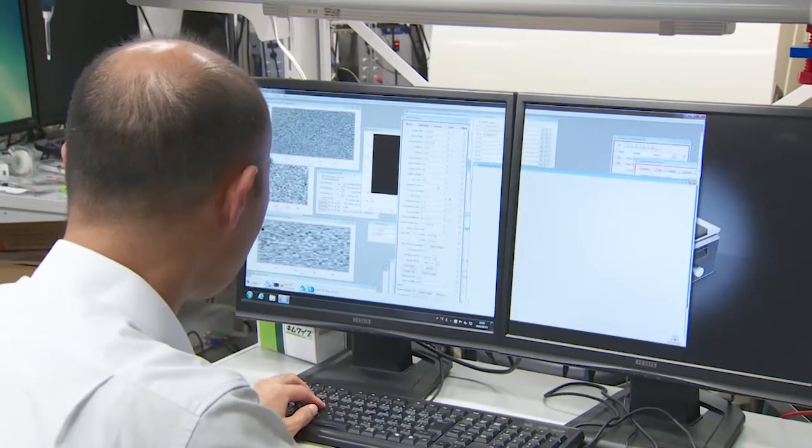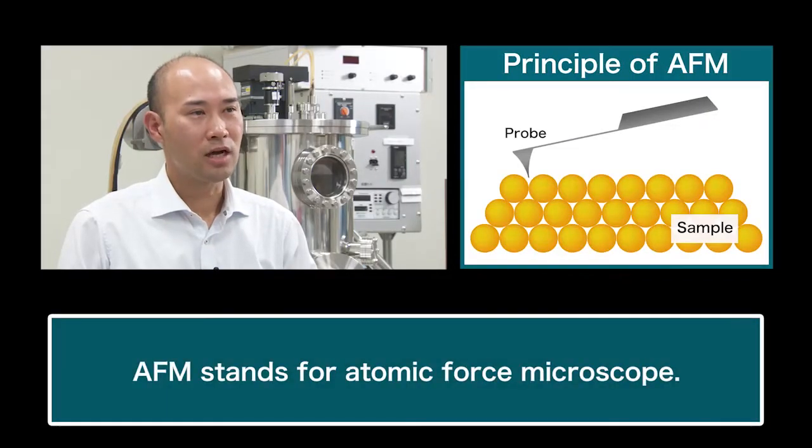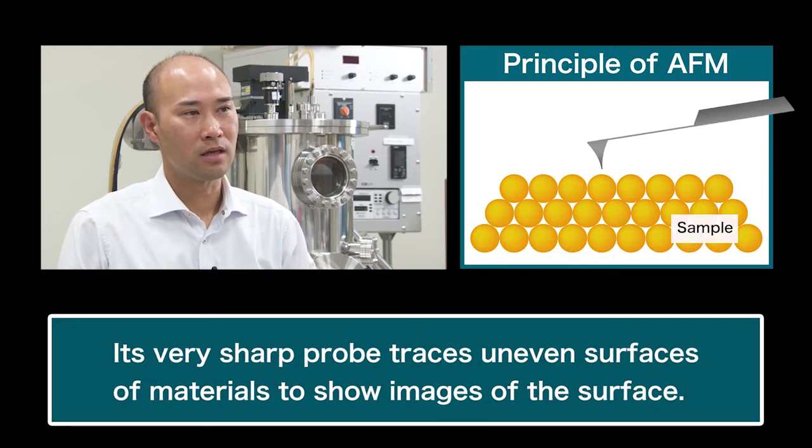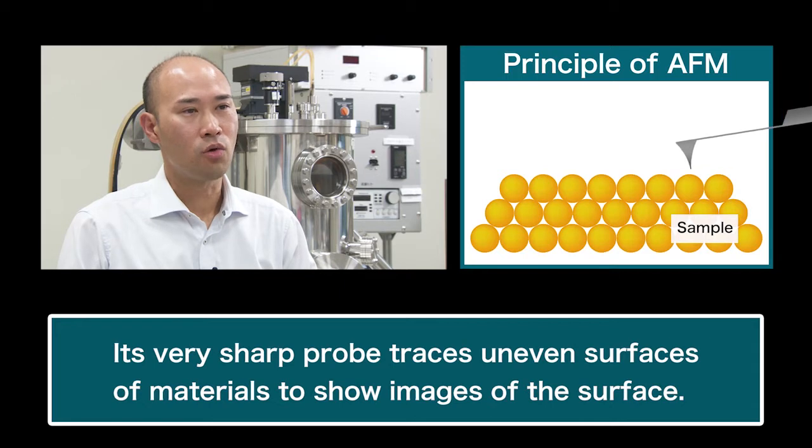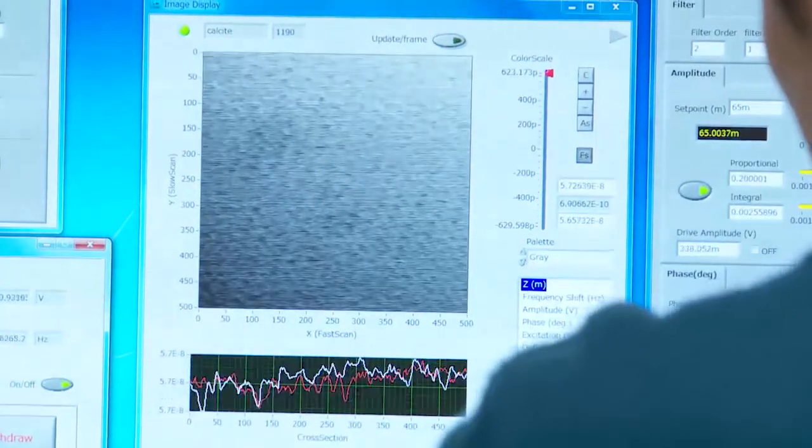Could you give us examples of small objects that can be detected? AFM is called the atomic force microscope. This method connects to the surface of materials. This enables us to see the arrangement of atoms. This means the microscope to observe atoms.